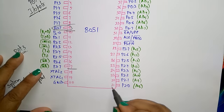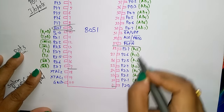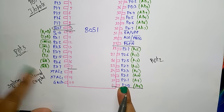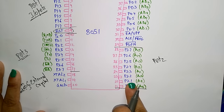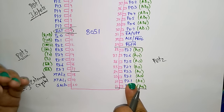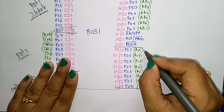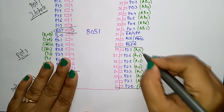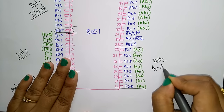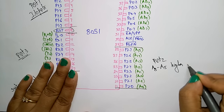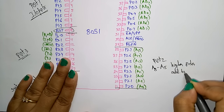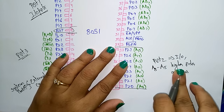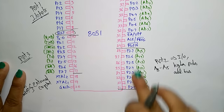Pins 21 to 28 form port 2. This port serves as an input/output port and also carries the higher-order address bus signals, which are multiplexed on the same pins. So A8 to A15 are the higher-order address bus signals. Port 2 acts as both I/O port and higher-order address bus.